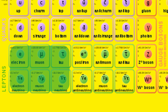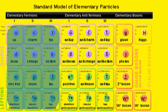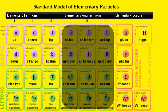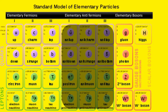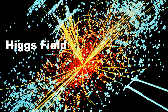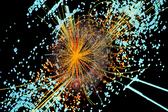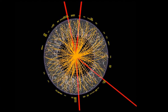Electrons, muons, tau and neutrinos are together known as leptons. Quarks and leptons together form fermions. All these fermions have anti-particles too. When W and Z bosons interact with the Higgs field, an invisible field that fills the universe, they acquire mass. But particles like photons don't interact with this field and have no mass. The Higgs field has an associated particle called the Higgs boson.